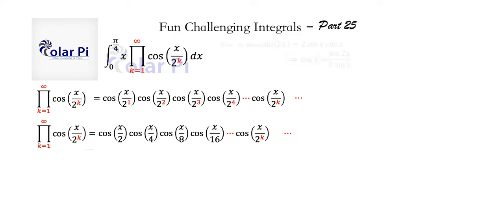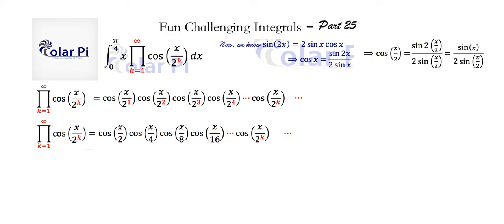Next, we recall from trigonometry the sine double angle formula, which says that sine of 2x equals 2 sine x cosine x. If we divide both sides by 2 sine x, we get this equation. This is very useful because we can figure out what cosine of x over 2 is using this right-hand side. Cosine of x over 2 equals sine of 2 times x over 2 divided by 2 times sine of x over 2. Since the 2 and x over 2 are both in the argument of sine, we can multiply them and reduce it to sine x in the numerator.